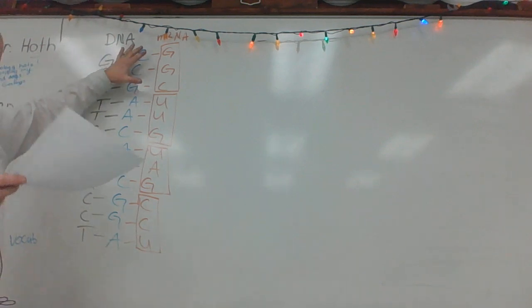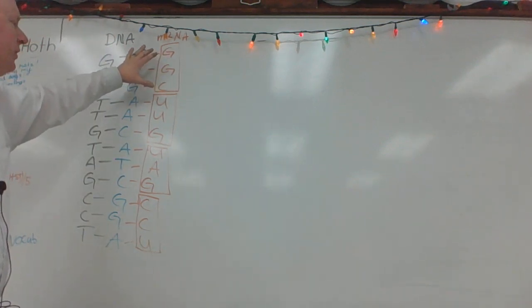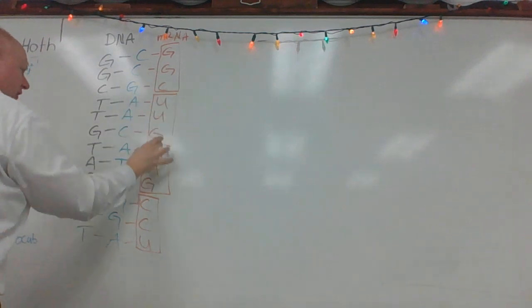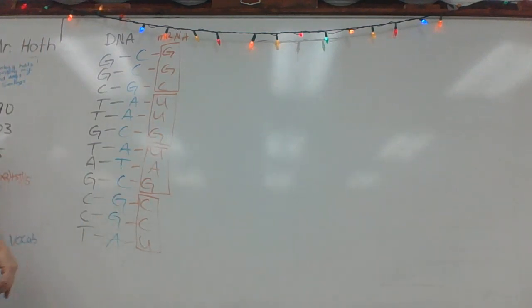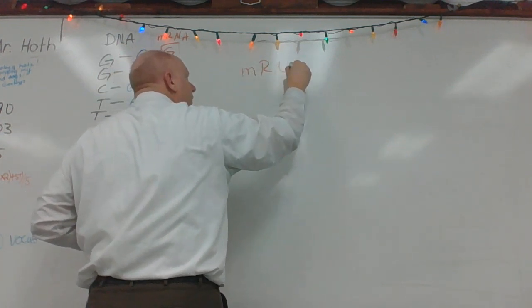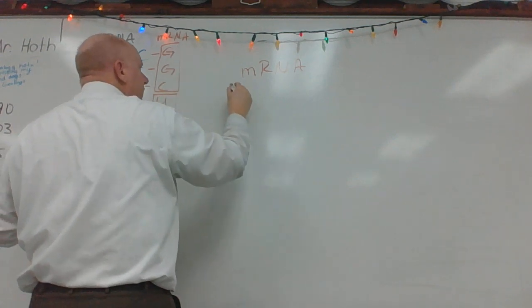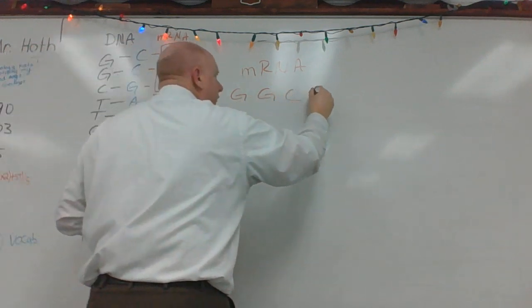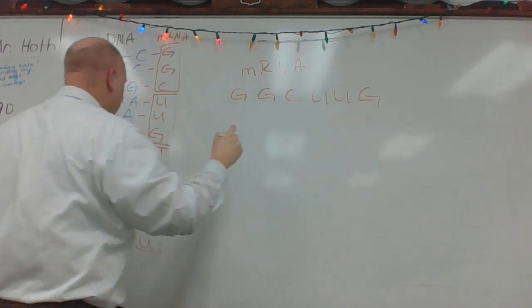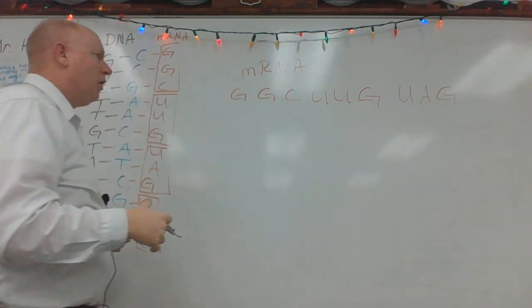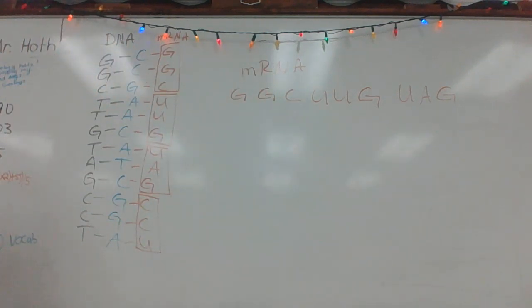So again, these are the codons that specify for specific amino acids. Once this stops, this is a stop codon, transcription stops, this then leaves the nucleus and heads for the ribosome. And once it is there, remember, this is messenger RNA. And we have G, G, C, and U, U, G, and U, A, G, and we could go on further, but remember, that was a stop codon.